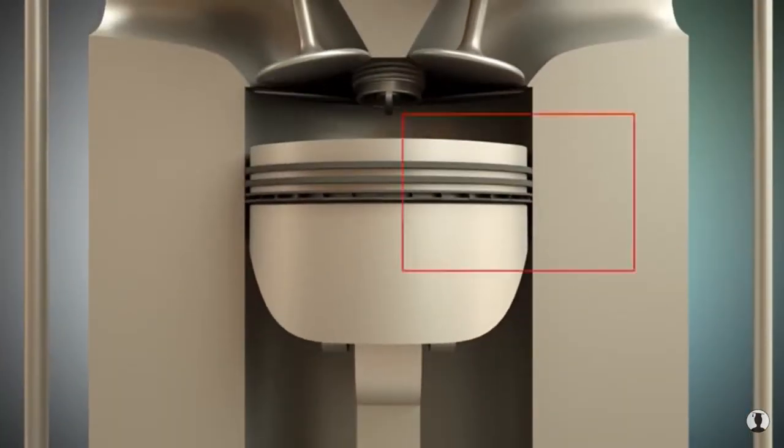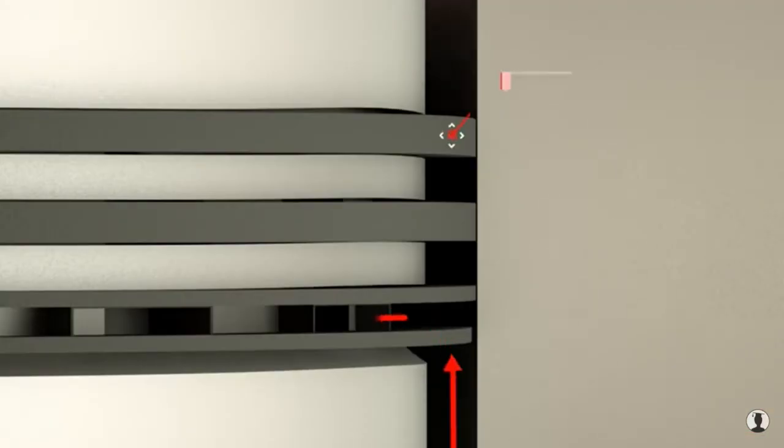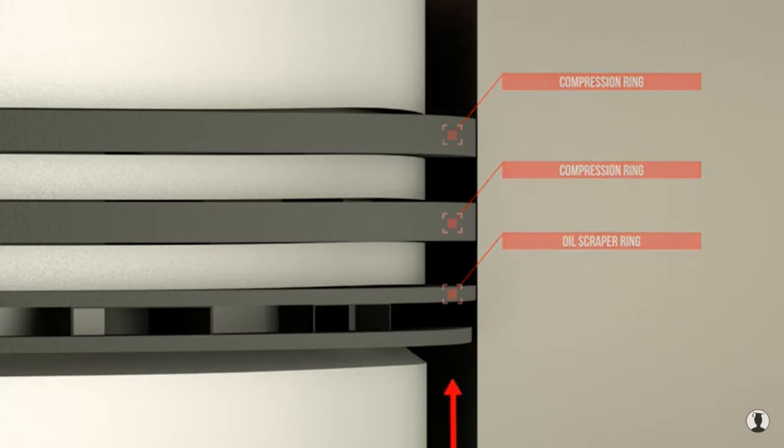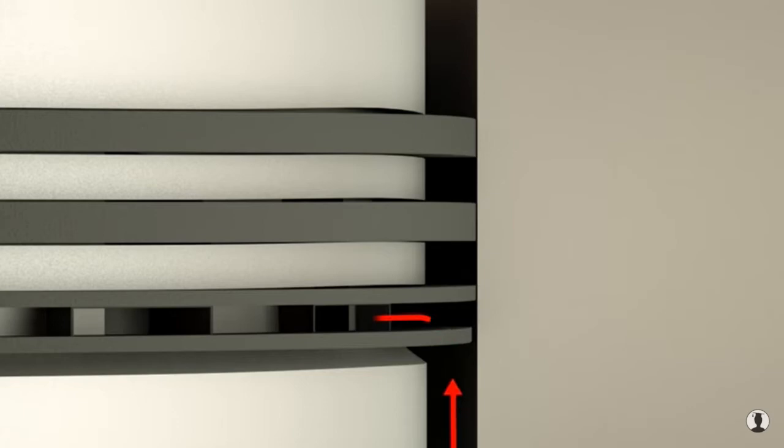The piston has one or two compression rings and one oil scraper ring. The oil scraper ring is responsible for controlling the oil balance at the piston and the compression rings. Excess oil flows inwards through holes, especially when the piston is running down. Then, the oil can drain down from the piston into the oil sump.